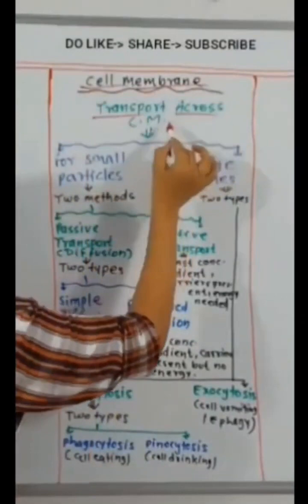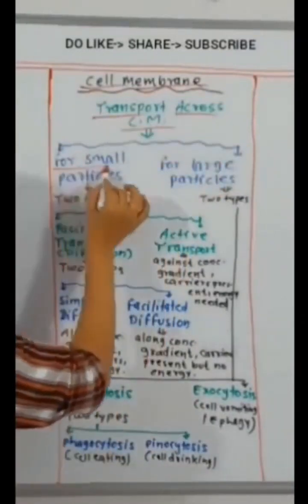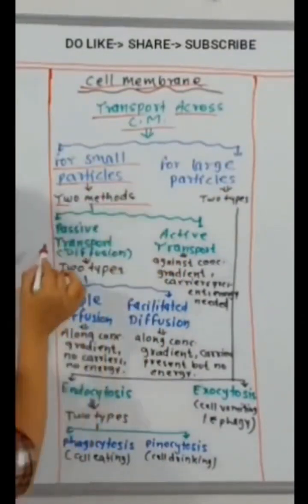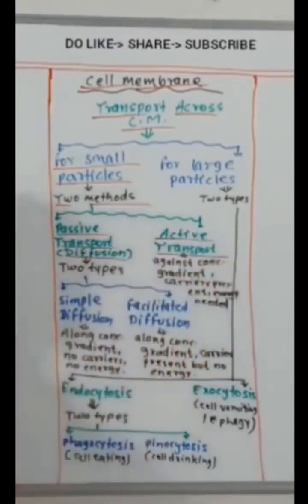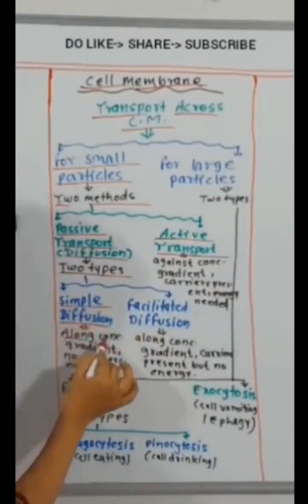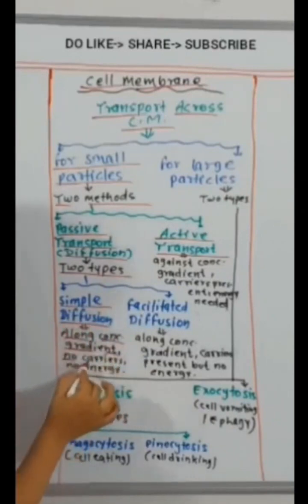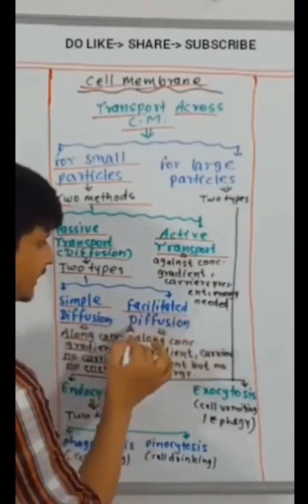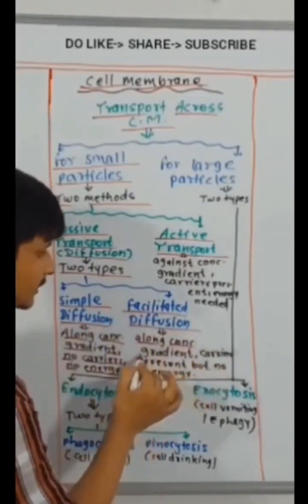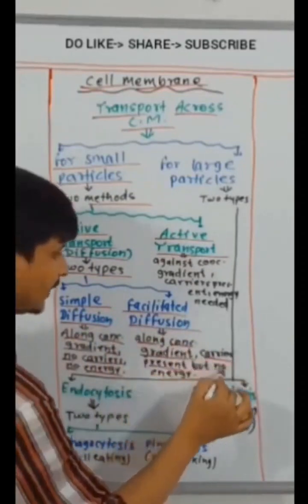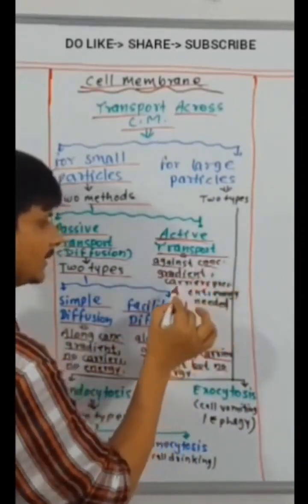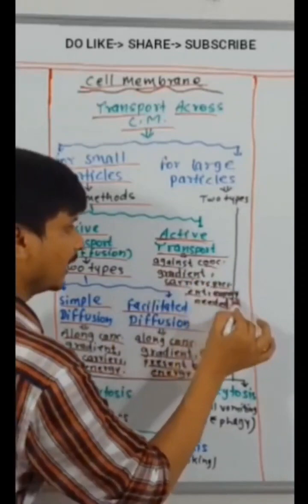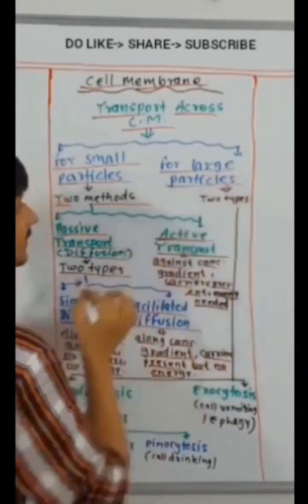Transport across cell membrane. For small particles, two methods: passive transport, diffusion, active transport. Passive transport, two types: simple diffusion, along concentration gradient, no carriers, no energy. Facilitated diffusion, along concentration gradient, carriers present but no energy. Active transport, against concentration gradient, carriers present, energy needed.